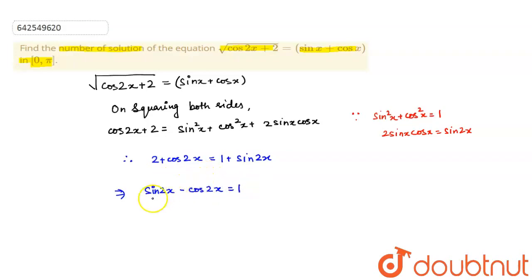So, again squaring on both sides. What do I get? 1 minus sin 4x equals 1.